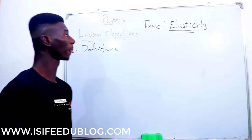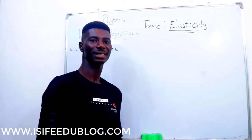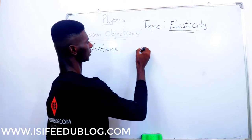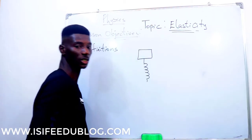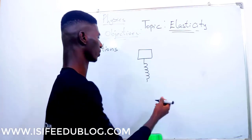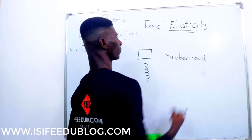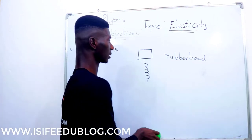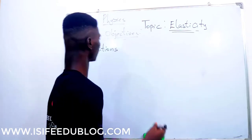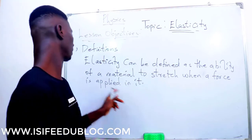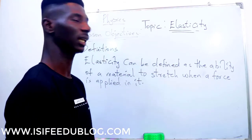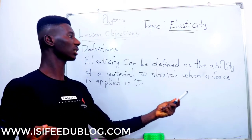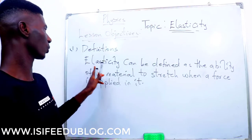First of all, what is elasticity? Elasticity deals with materials, which are also called elastic materials. For instance, you have a spring — a spring is an example of an elastic material. Also, we have a rubber band — a rubber band is also an example of an elastic material. Elasticity can be defined as the ability of a material to stretch when a force is applied to it. If you get a rubber band and stretch it, the size of the rubber band continues increasing. That process is what you call elasticity.